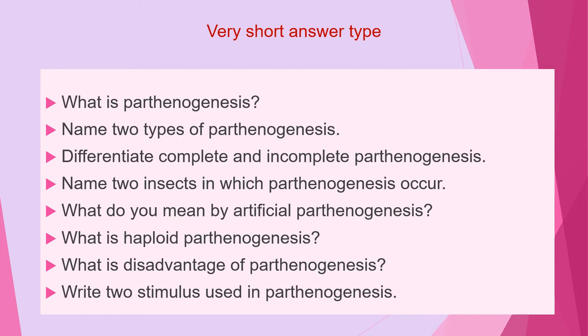The first question of this category is: what is Parthenogenesis? Second question is: name two types of Parthenogenesis. Question 3: differentiate complete and incomplete Parthenogenesis. Next question is: name two insects in which Parthenogenesis occur.